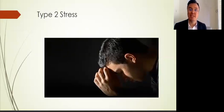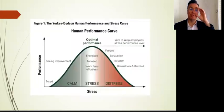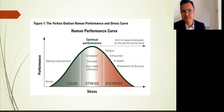So here we see the Yerkes-Dodson human performance and stress curve. And as you can see, right smack dab in the middle, that x-axis there, where that stress is being monitored there.